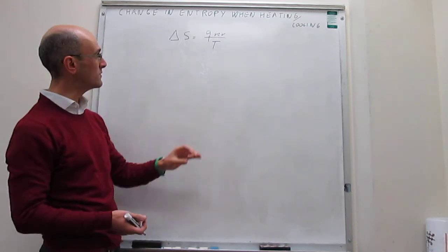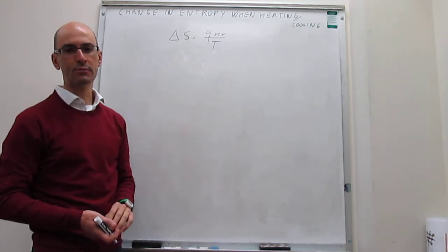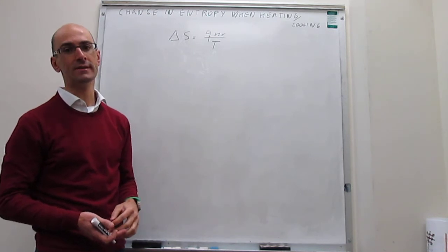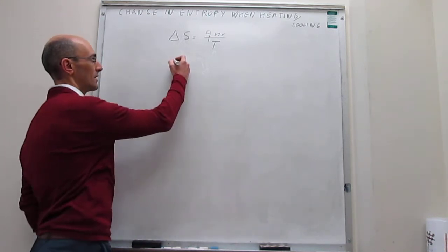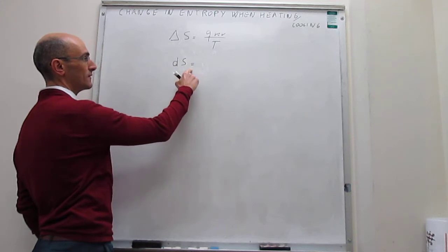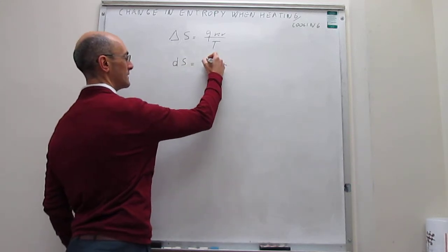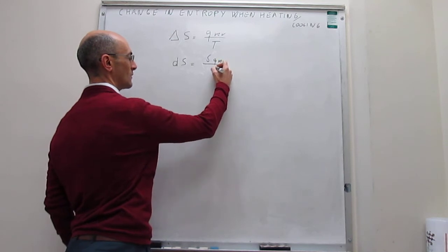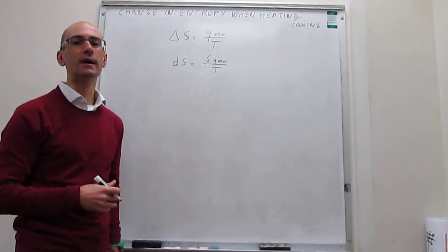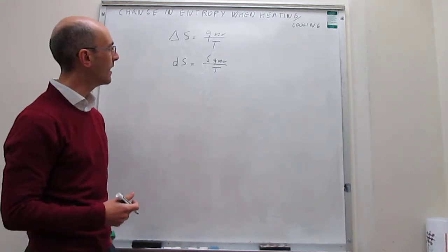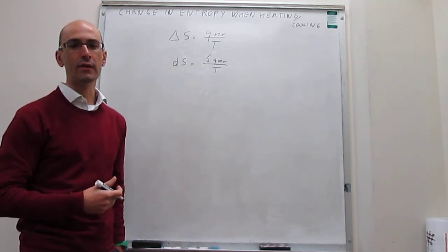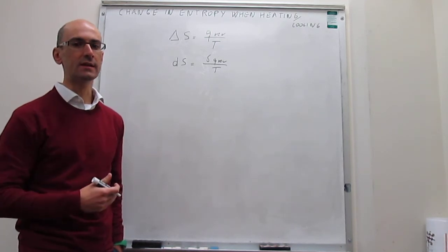When you have a change in temperature, what you have to do is take a step back from this expression and look at the differential or infinitesimal version of it. The idea is that if the change is very small, you change delta S to a differential dS, and then you have that this is equal to the differential of the reversible heat over the temperature. Then what you do is simply integrate this to get a macroscopic change — and that integration allows us to incorporate how the temperature changes into that process.